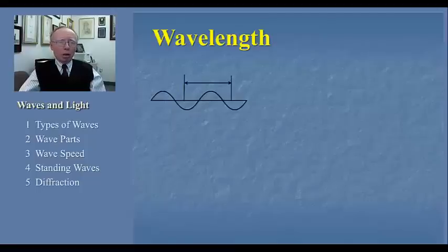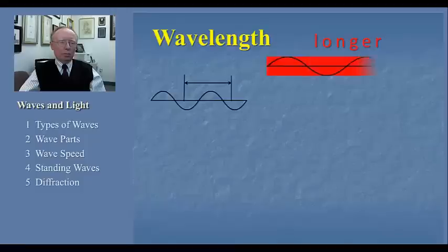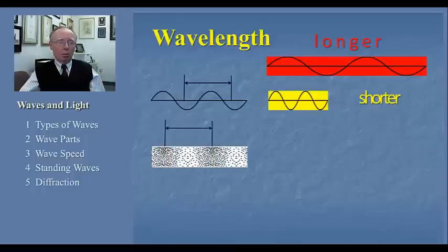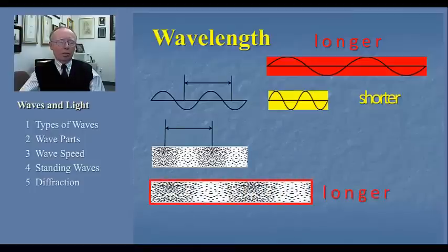If the wavelength were longer, it would look like this. And if shorter, it would look like this. For a compression wave, we apply the same principle. Here's the wavelength of a compression wave. If the wavelength were longer, it would be more stretched out. If shorter, it would be more compressed.